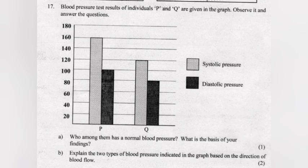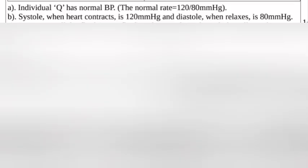Question 17: Blood pressure test results of individuals P and Q are given in the graph. A — Who has normal blood pressure and what is the basis? Answer: Individual Q has normal BP; the normal rate is 120/80 mmHg. B — Explain the two types of blood pressure based on direction of blood flow. Answer: Systole — when the heart contracts, pressure is 120 mmHg. Diastole — when the heart relaxes, pressure is 80 mmHg.